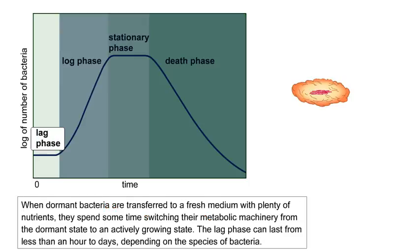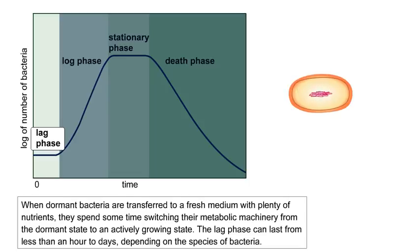When dormant bacteria are transferred to a fresh medium with plenty of nutrients, they spend some time switching their metabolic machinery from the dormant state to an actively growing state. The lag phase can last from less than an hour to days, depending on the species of bacteria.